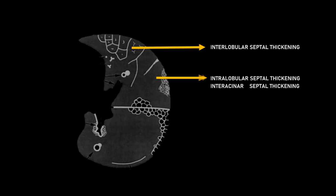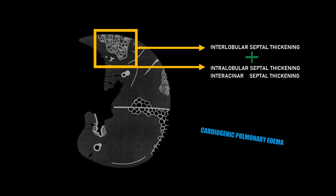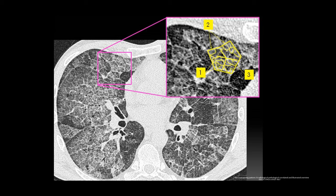In this example, we can see the interlobular septal thickening and now the intralobular septal thickening together. This is another representation of the first phase of the cardiogenic pulmonary edema, also called the interstitial phase. In this real patient, we can see interlobular septal thickening and intralobular septal thickening.